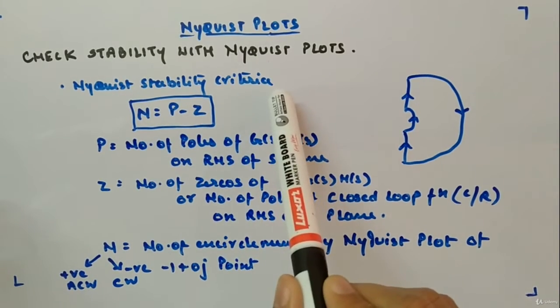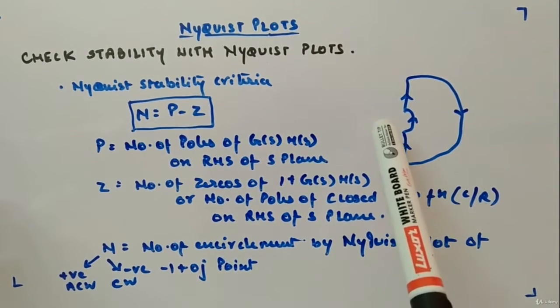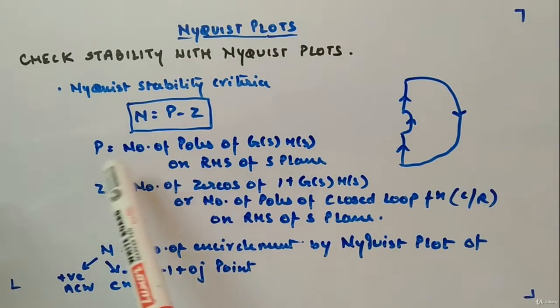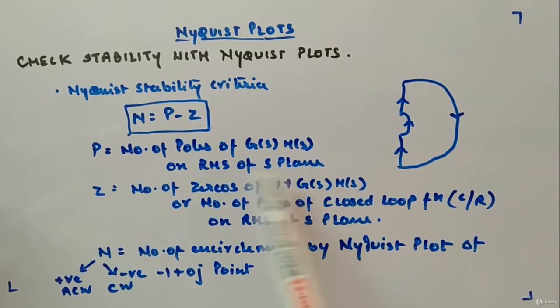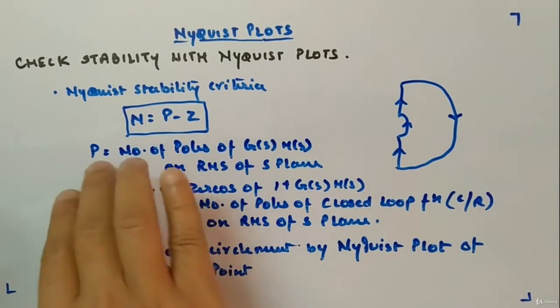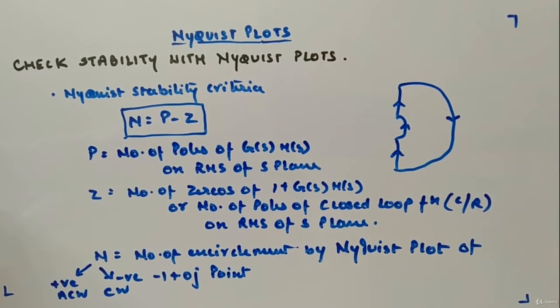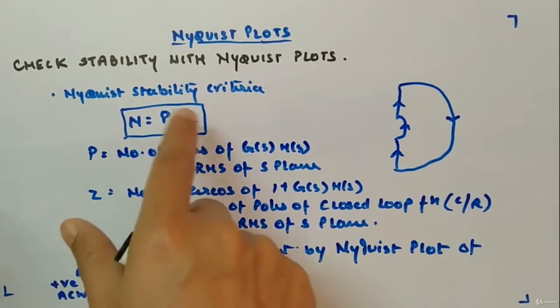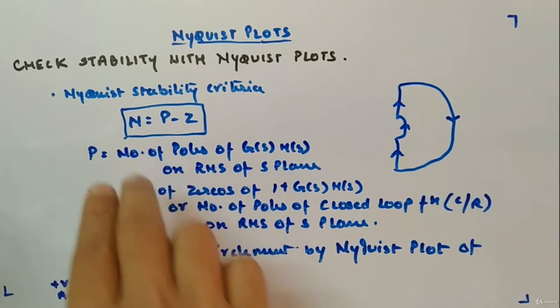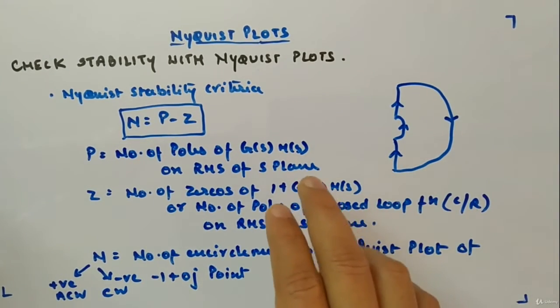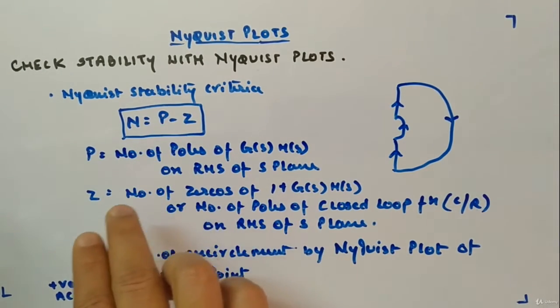Nyquist stability criteria given for this contour, where P is number of poles of G(s)H(s) on the right hand side of s-plane. Out of these three variables we have to find Z always, and we will extract P from open loop transfer function.